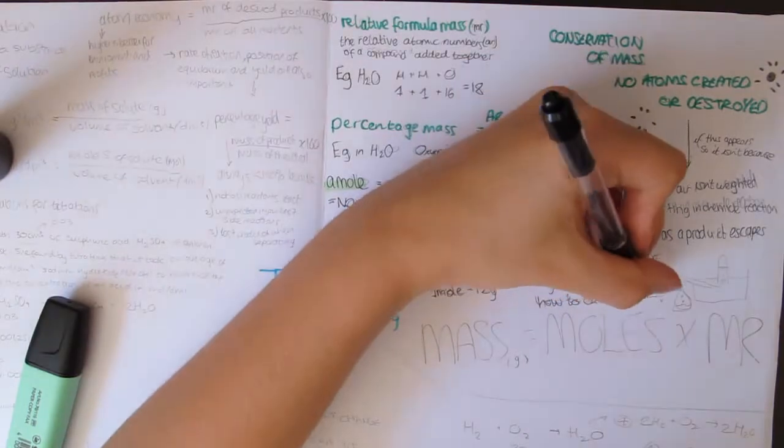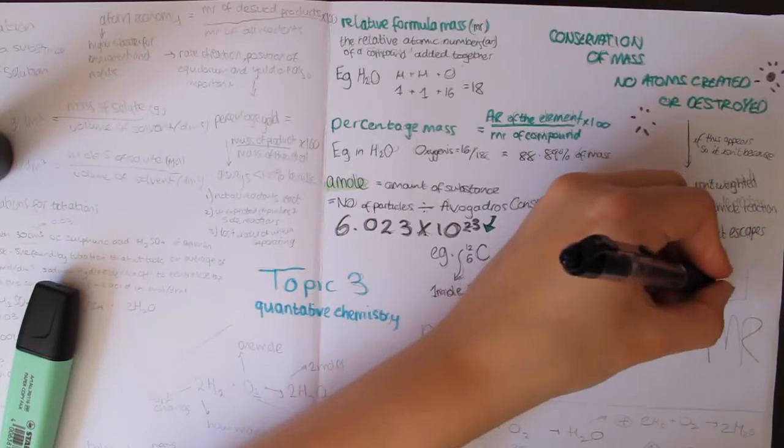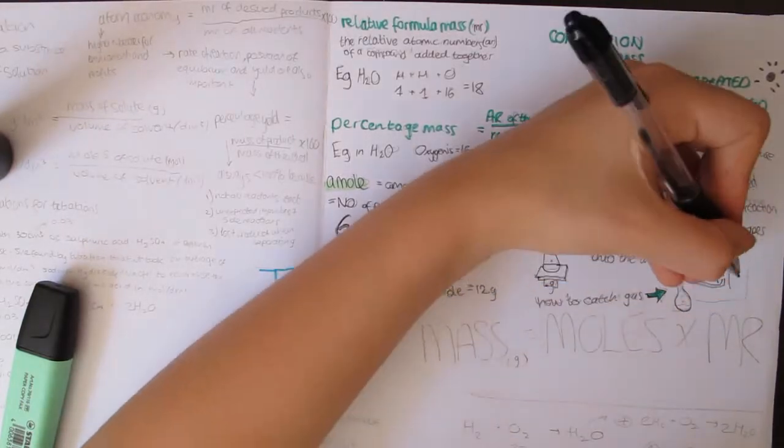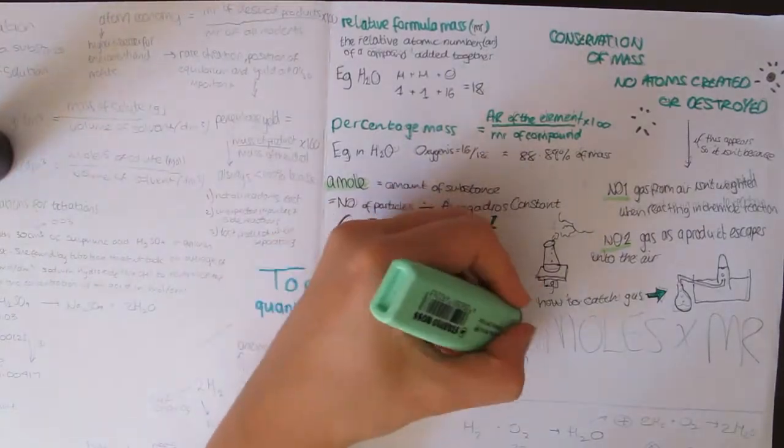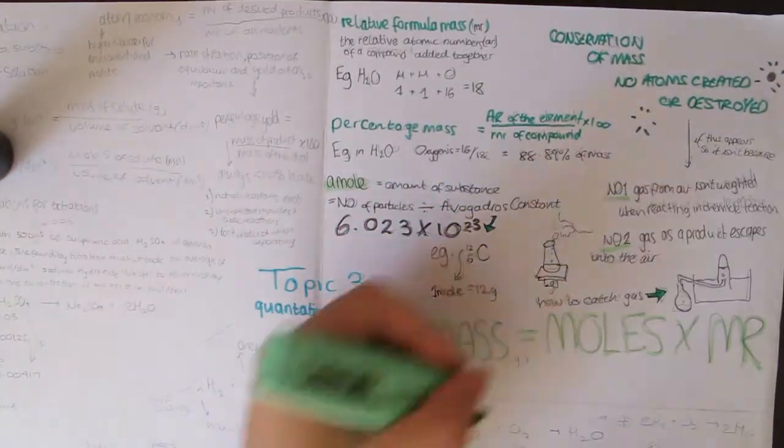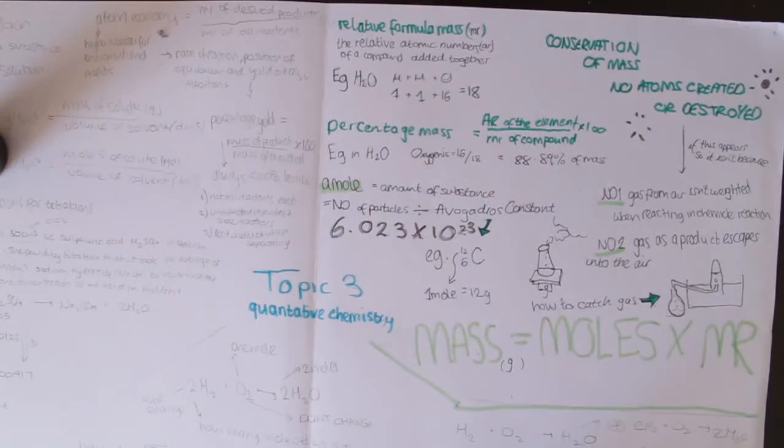During a chemical reaction, no atoms are destroyed or created, as they are simply rearranged into a new format. This means mass across all products is the same as the mass across all reactants. In real life, mass may seem not to be conserved for one of two reasons. There are gases involved, which are coming from or being released to the air, thus meaning that they can't be weighed on a measuring scale.